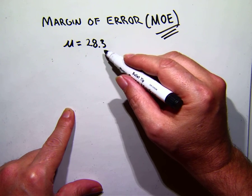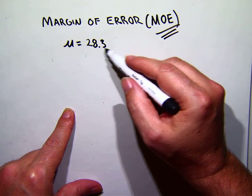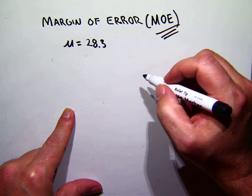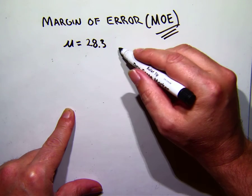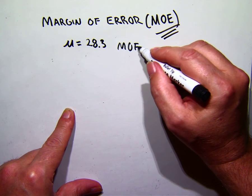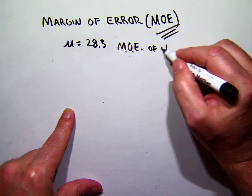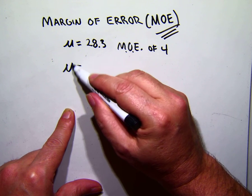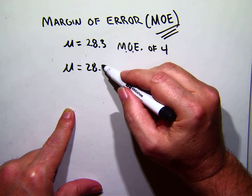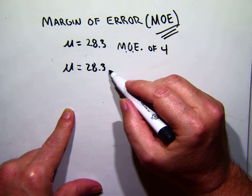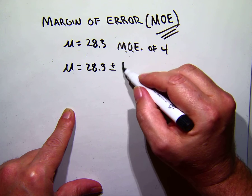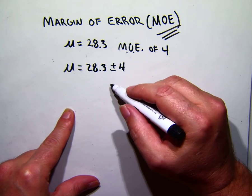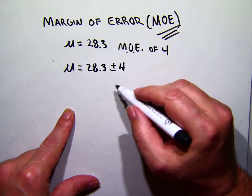So let's say we have an estimated population mean, and let's take for example the potato chip bags that were 28.3 grams, and let's say we had a margin of error of four. Well, what that means is that the true mean is roughly 28.3 grams plus or minus four grams.